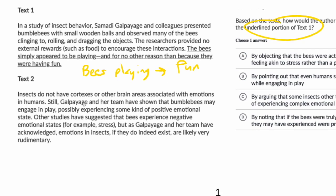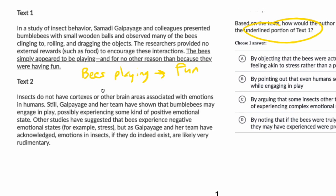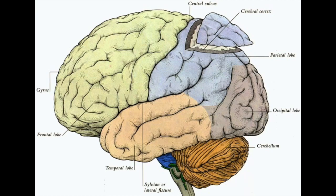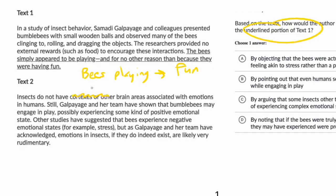So text two says insects do not have cortexes or other brain areas associated with emotions in humans. Here we could just note: insects do not have brain areas associated with emotions in humans. Still, this researcher and her team have shown that bumblebees may engage in play, possibly experiencing some kind of positive emotional state, like fun.